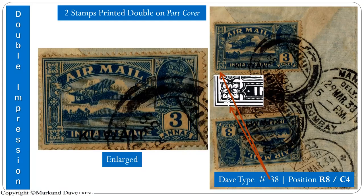Another interesting item: both stamps on part of this cover have double impression. This is listed under the Kuwait section of Stanley Gibbons, and I was fortunate to acquire this nice piece from eBay — both stamps printed double, on part cover. The top stamp, shown in the enlarged image, also has type 38 from my book: the frame bars are broken on the bottom left, underneath the floral ornament. That falls on row eight, column four — that is the position of that particular error. But here we also have the double impression variety, which is the extra bonanza.